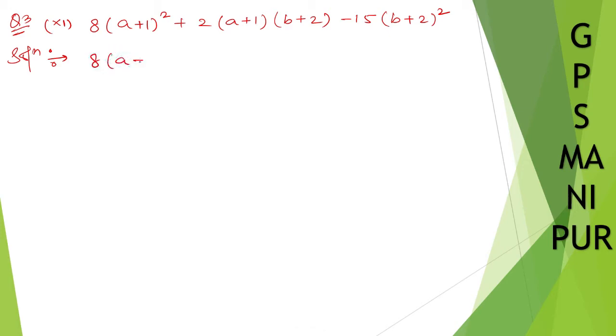8(a+1)² plus... 15 into 8. Multiply 15 into 8. 8×5 is 40, 8×1 is 8, plus 4 is 12. So, 120. Two numbers that multiply to 120, and if you subtract, you get 2. So it is 12 into 10, and 12 minus 10.